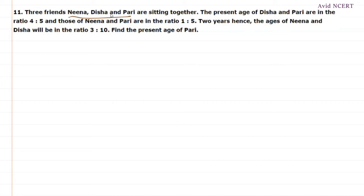So, find the present age of Pari. From the given data, we know that the present age of Disha and Pari are in the ratio 4 is to 5. So, Disha divided by Pari are in the ratio 4 by 5.